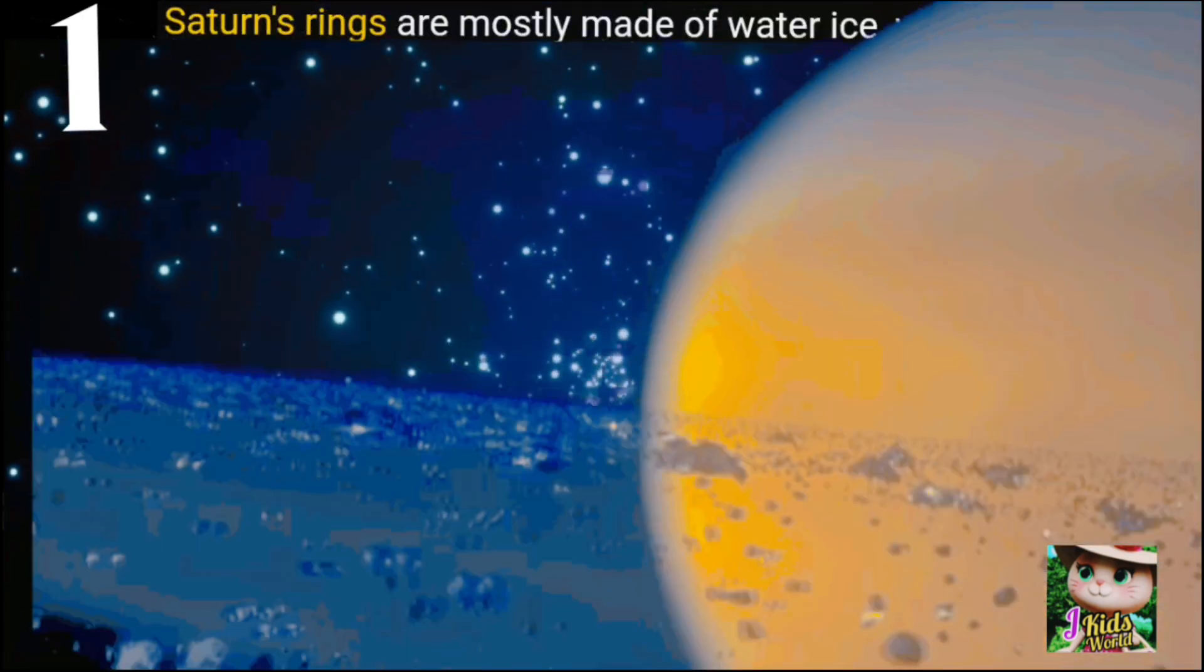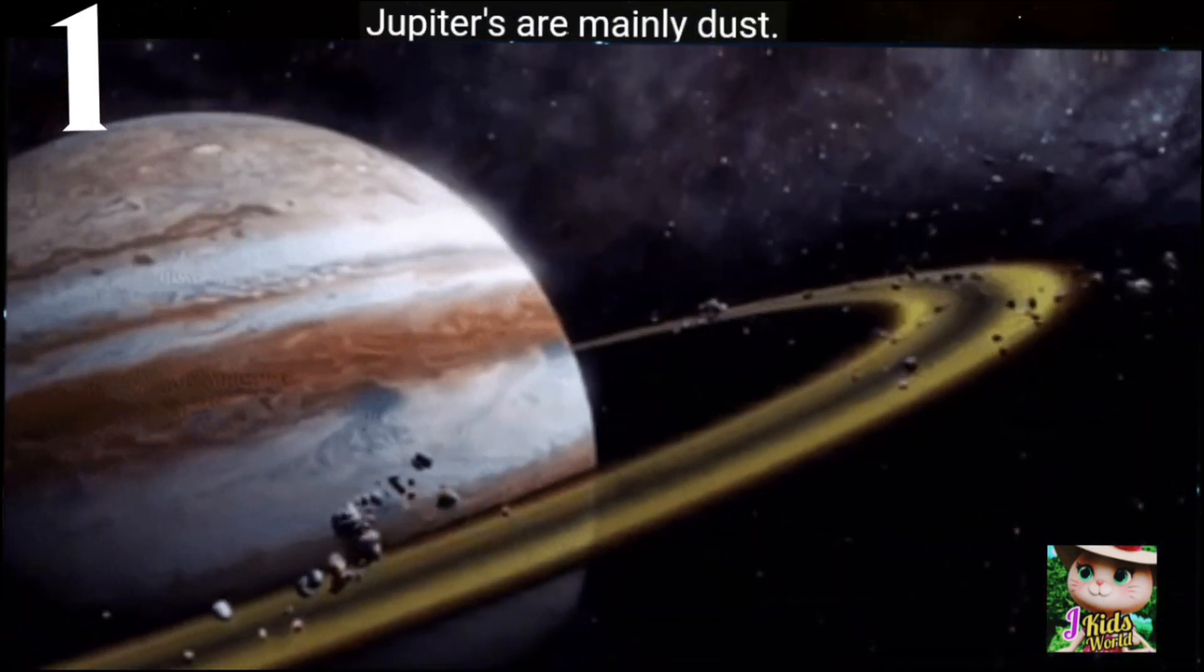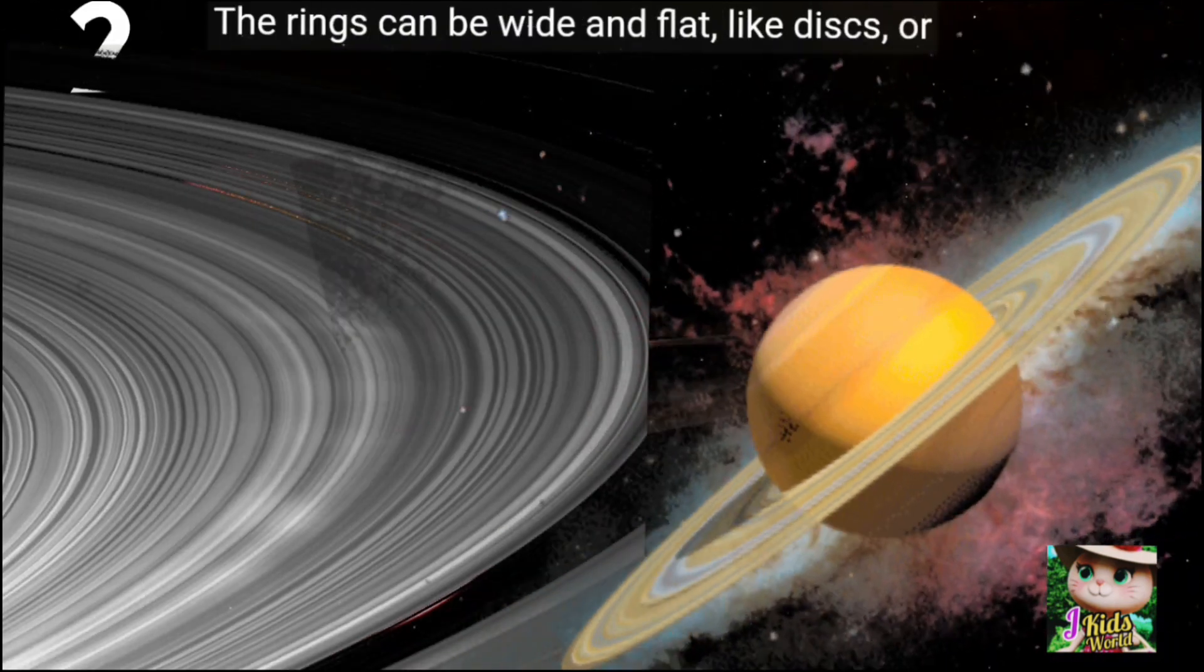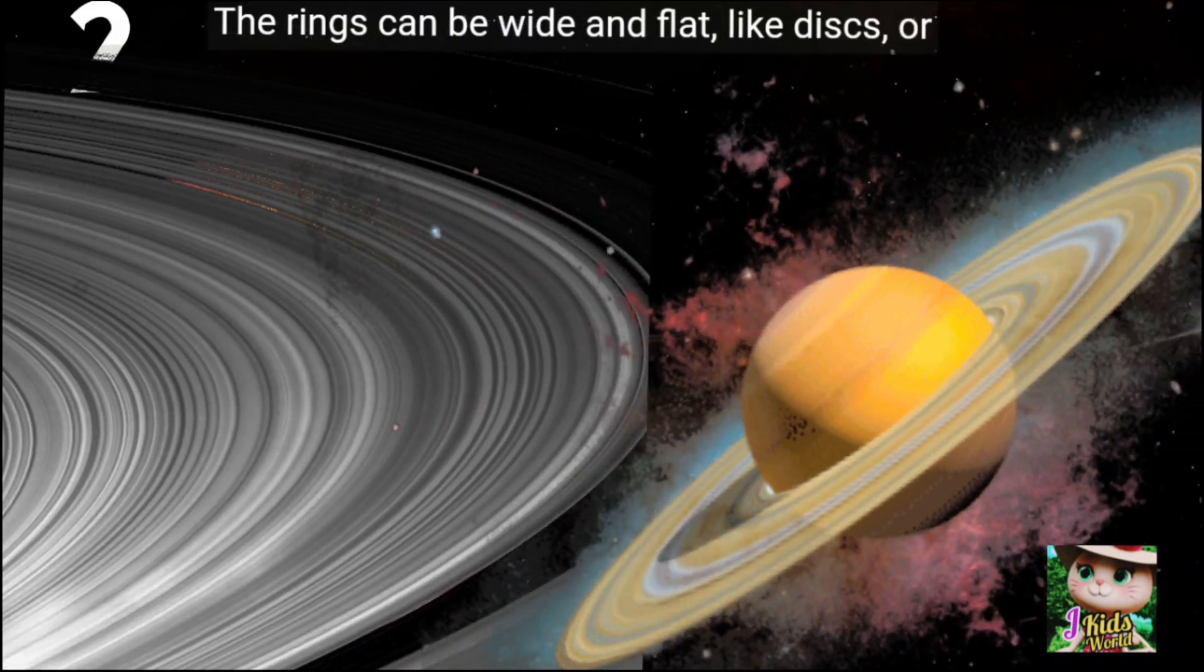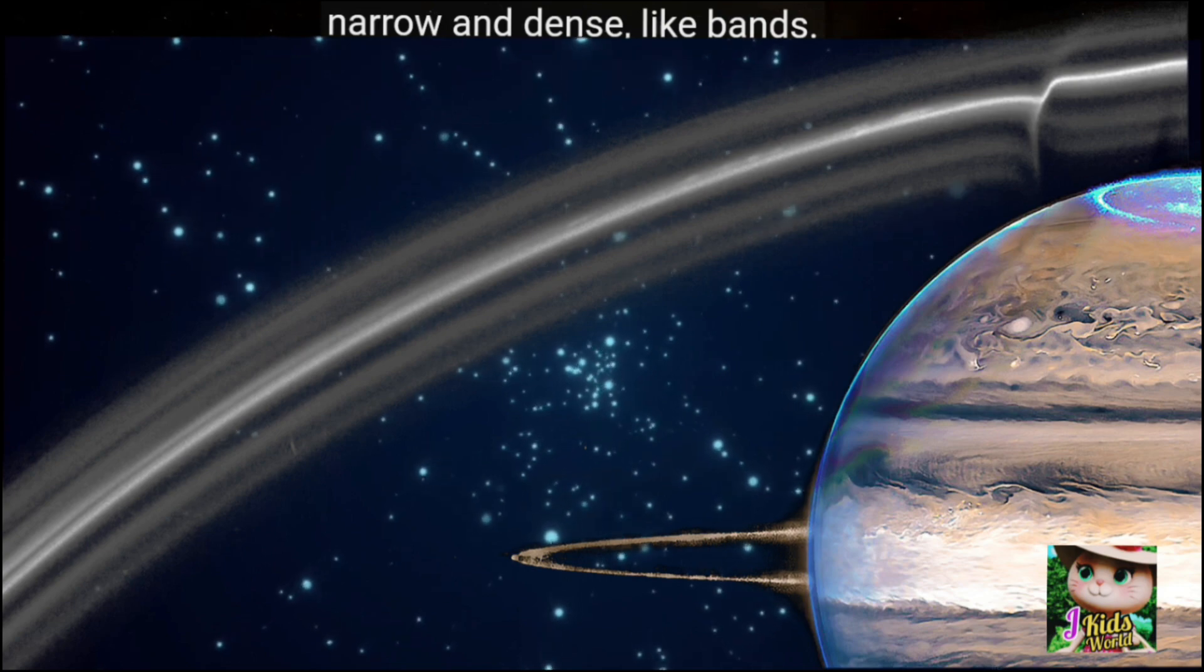Saturn's rings are mostly made of water ice, while Jupiter's are mainly dust. The rings can be wide and flat, like disks, or narrow and dense, like bands.